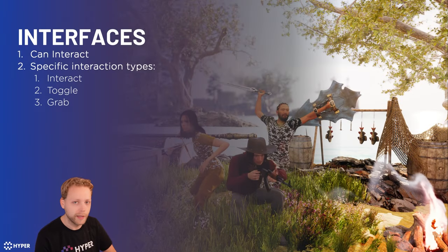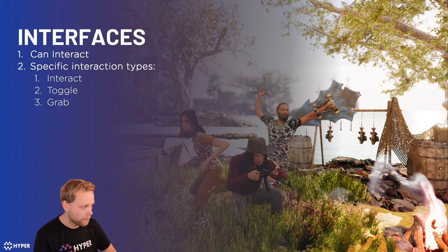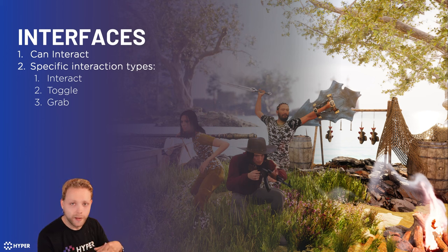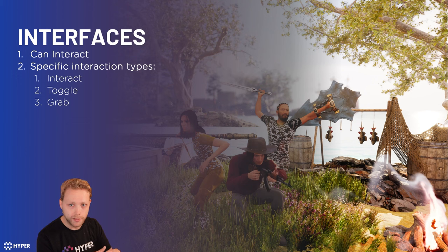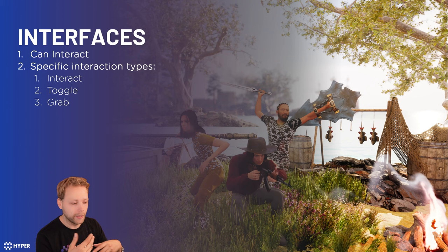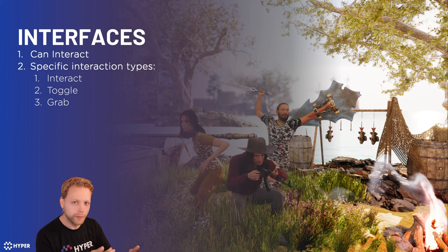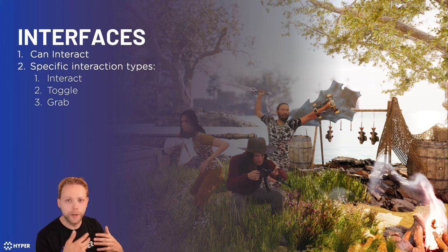The first thing will be the interfaces. The interfaces are the core of the interaction system. The CAN interact interface is the base of all the interactions you could do in the world. It has variables like: do I need to play an animation when interacting? Do I need to show a text, and at what height and position? Do I need to show a button like E or a gamepad button? Do I need to call this interaction event on the server or on the client? Basically, it is the core of every interaction from the player's perspective.